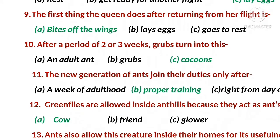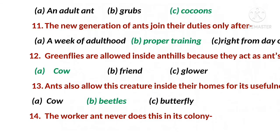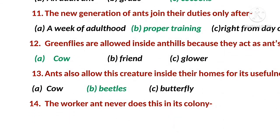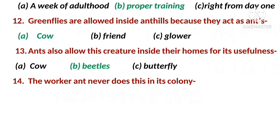MCQ 9: The first thing the queen does after returning from her flight - the right option is A - bites off the wings. MCQ 10: After a period of two or three weeks, grubs turn into this - the right option is C - cocoons. MCQ 11: The new generation of ants join their duties only after - the right option is B - proper training.